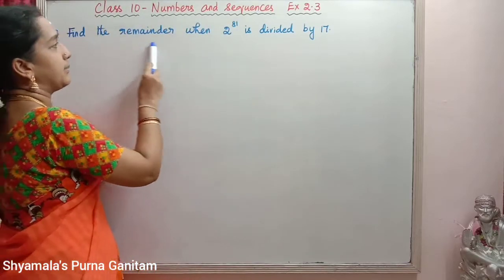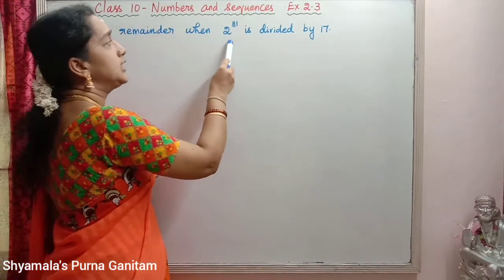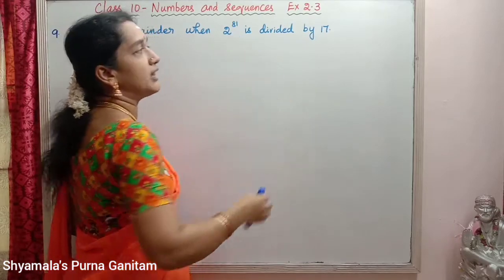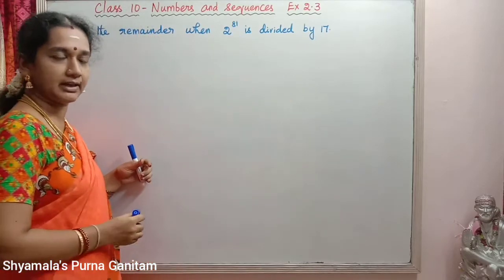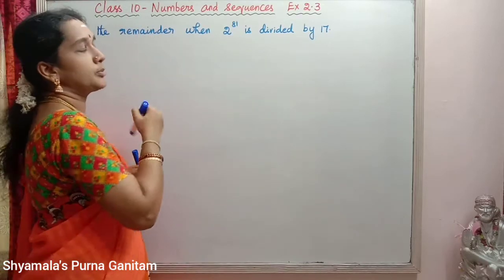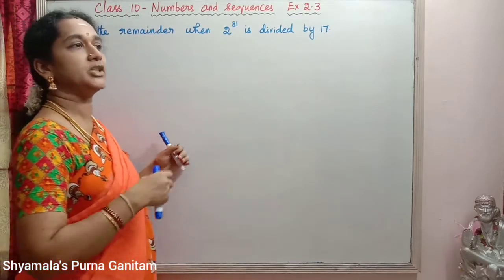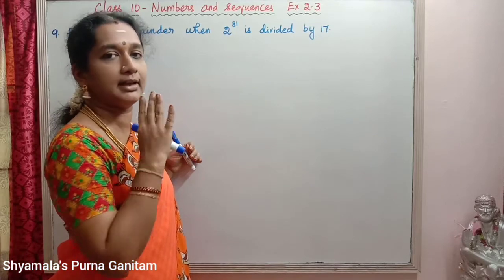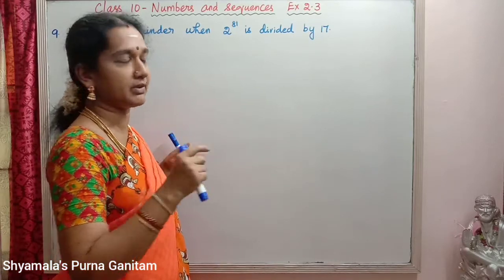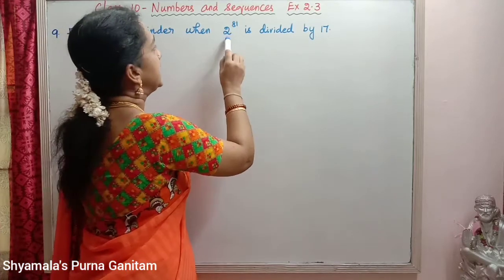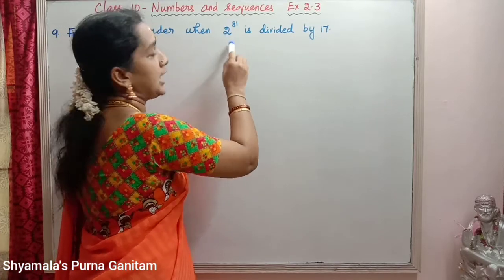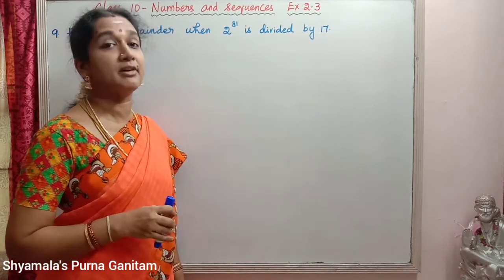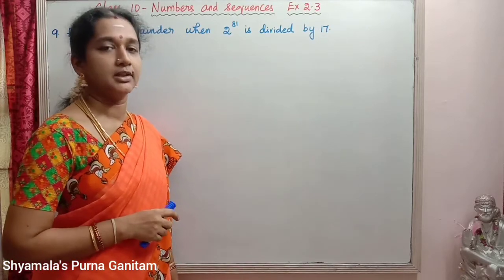Find the remainder when 2 power 81 is divided by 17. Normally, in the previous sums, a number is given and we are asked to find the remainder. Here it is given in exponential form — that is, in some power it is given.